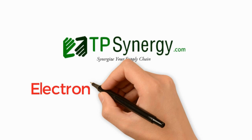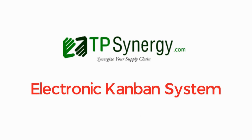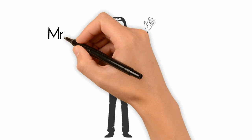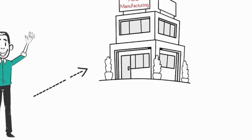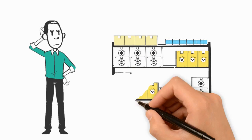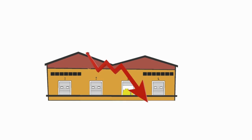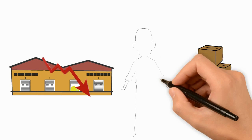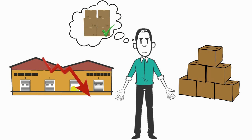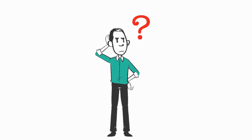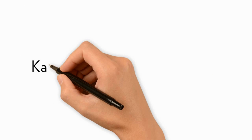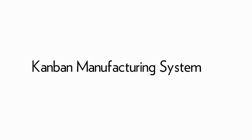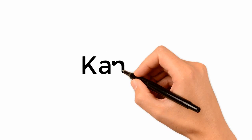TP Synergy Electronic Kanban System. Meet Mr. Joe, inventory planner for ABC Manufacturing Company. Joe has a big inventory problem — he either has inventory shortage or excess inventory, and never an optimum, smooth inventory flow. The solution: use a Kanban manufacturing system. What is a Kanban manufacturing system?